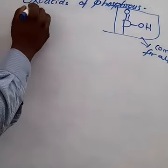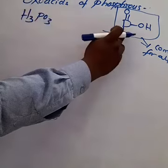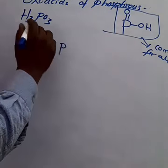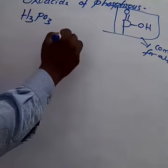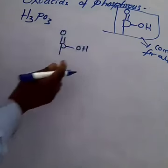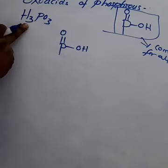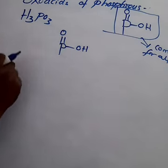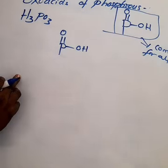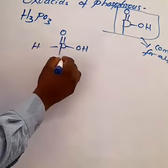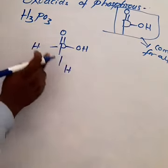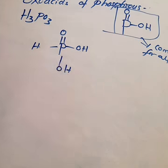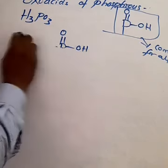For orthophosphorous acid H3PO3: the common group P=O and OH accounts for 1 hydrogen and 2 oxygen. Remaining: 2 hydrogen and 1 oxygen. So we add two OH groups on the sides of phosphorus. The structure of orthophosphorous acid is now complete.